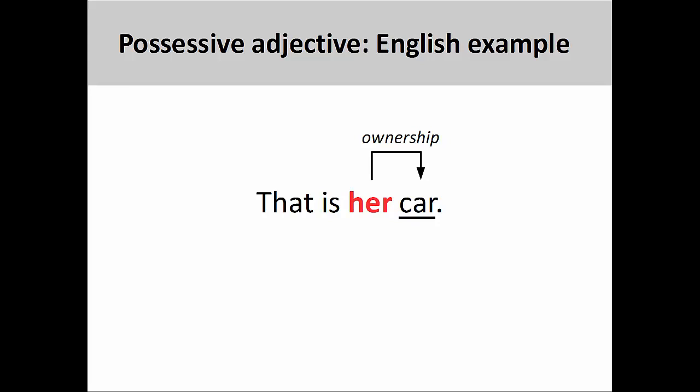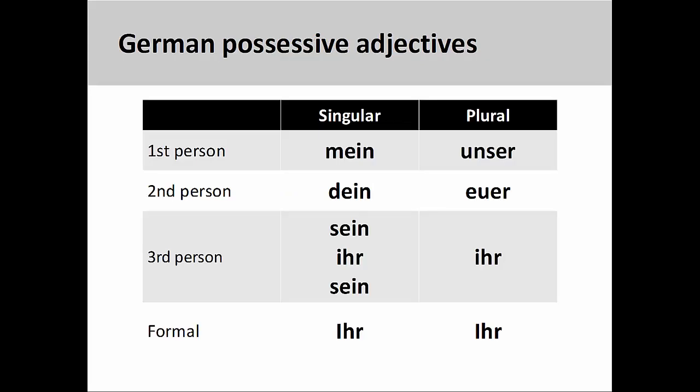German possessive adjectives function in much the same way, although with important differences we need to be aware of. Let's take a look at them now. Like English, possessive adjectives in German are organized by number, person, and gender.